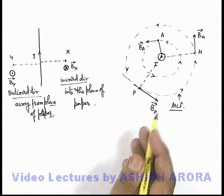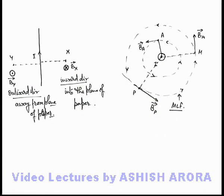This is the way how we analyze the direction of magnetic field in the surrounding of a current carrying wire.